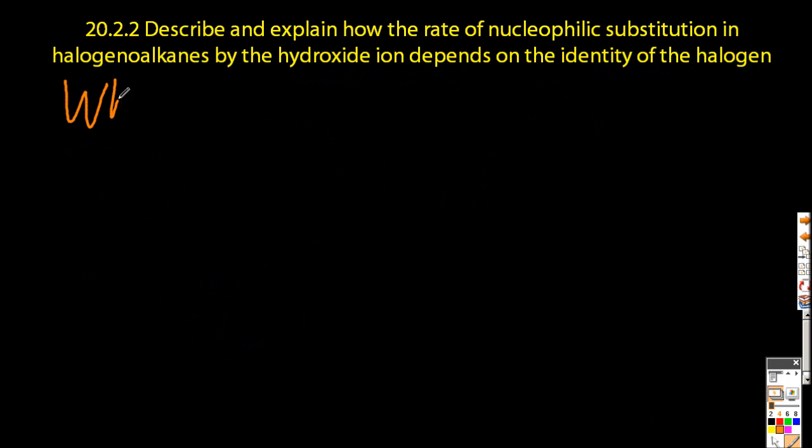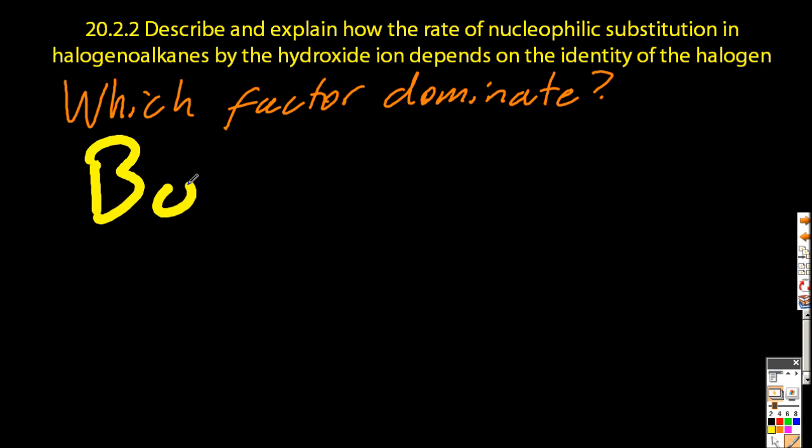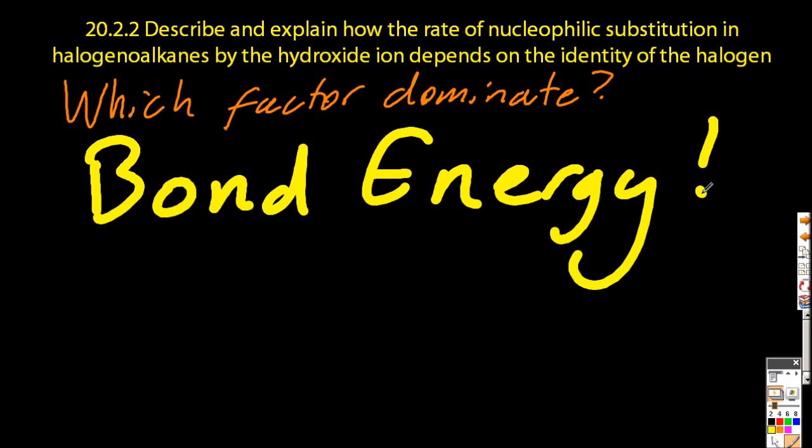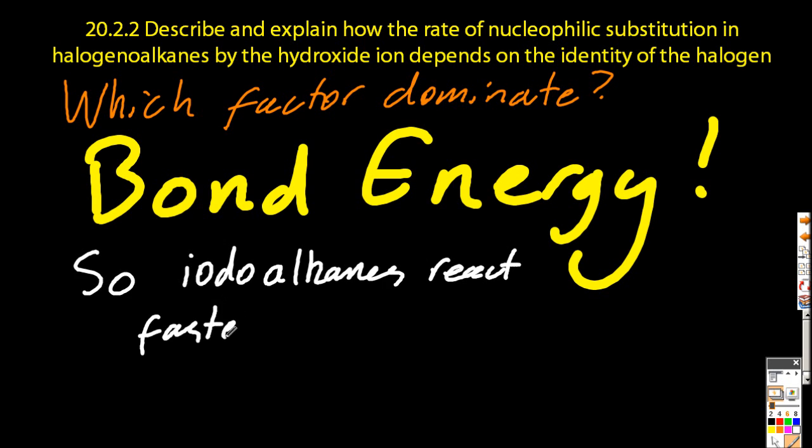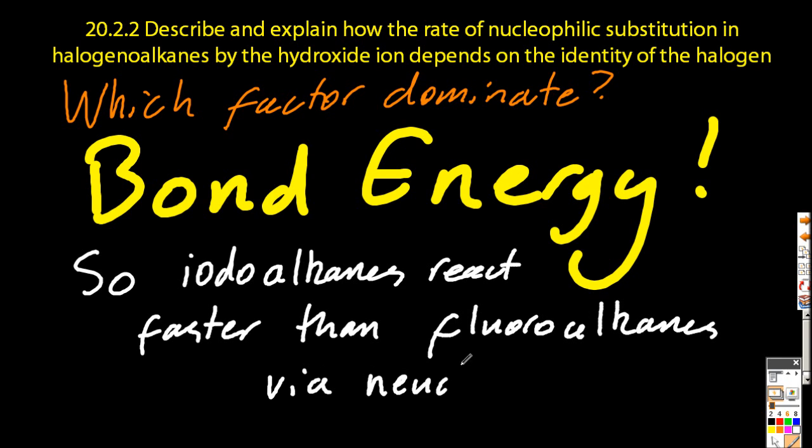So there's two competing factors here. Which of these two perhaps equal and opposite factors dominate? Well, they're not equal. Bond energy is by far the more dominant factor. So that means the iodoalkane will react faster than the fluoroalkane, because the bonds in iodoalkanes are weaker. Even though fluoroalkanes have the more polar bond, and you'd think the OH- would be more attracted to it.